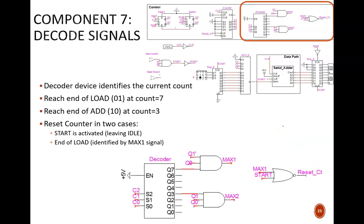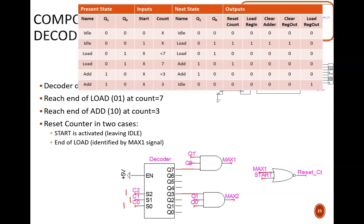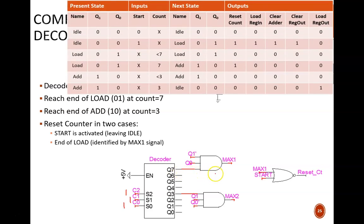Now for the last component, which ties up some of the loose ends. This decoder device and downstream logic gates are used to determine important signals discussed earlier: max1, max2, and reset count. The inputs to the decoder are just the counter outputs. So if the count is at 7, output line Q7 is high and all the others are low. According to the table, this is important only if the circuit is in load mode with state code 01.